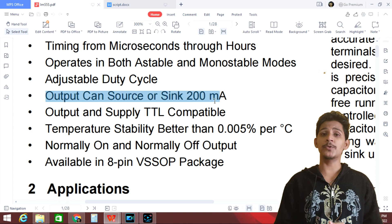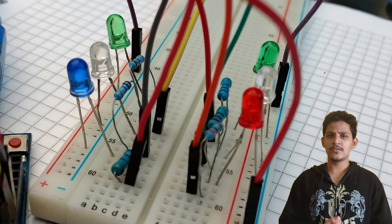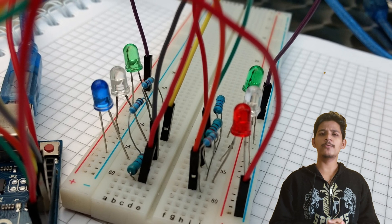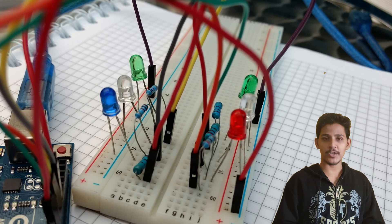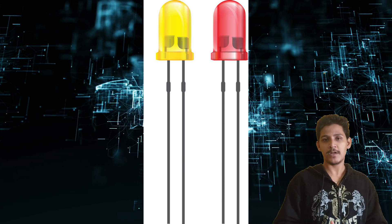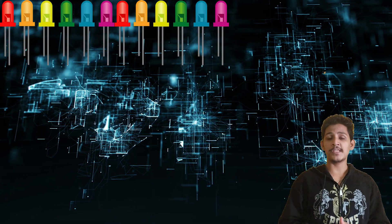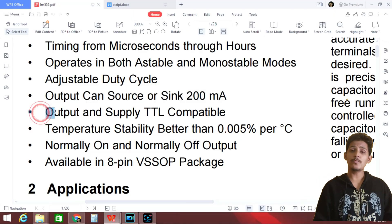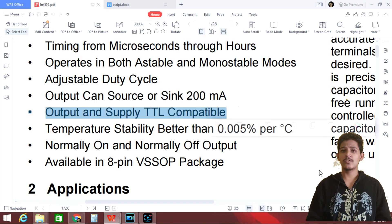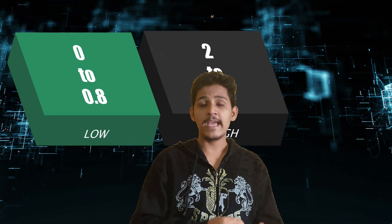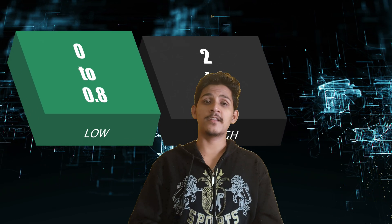Output can source or sink up to 200mA. To put that in perspective, an Arduino Uno has a maximum pin output current of 40mA, which can drive about two LEDs. With the 555 timer's 200mA output, you can drive up to 20 LEDs, assuming each LED consumes 10mA. Output and supply are TTL compatible, meaning 5V logic. For a 5V TTL logic level, a voltage from 0 to 0.8V is considered logic low and 2 to 5V is considered logic high.